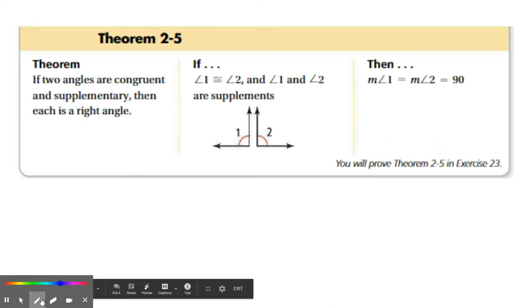Next, this is the last thing we'll talk about today. So it says if two angles are congruent and supplementary, then each angle is a right angle. Well, let's take a look at this picture. So we have two angles, angle 1 and angle 2. They're marked congruent. We also have angle 1 and angle 2, and we're told that they're supplements of each other.